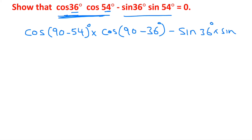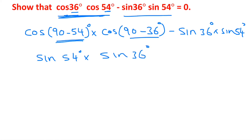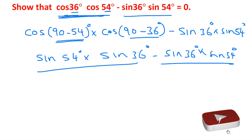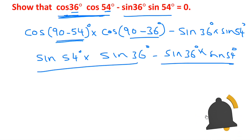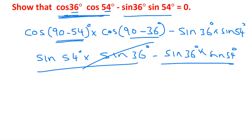Using the identity cos(90° - θ) = sin(θ), cos(90° - 54°) becomes sin(54°), and cos(36°) = cos(90° - 54°) becomes sin(54°). Similarly, cos(54°) = cos(90° - 36°) = sin(36°). So the expression becomes sin(54°) × sin(36°) - sin(36°) × sin(54°). These two terms are identical, so they cancel, and the answer is 0.